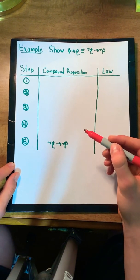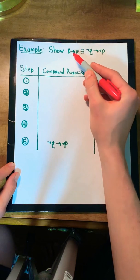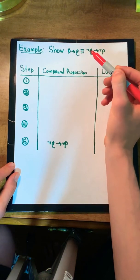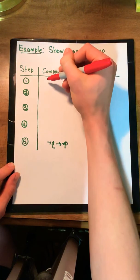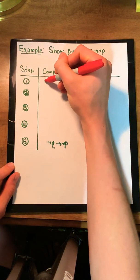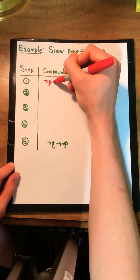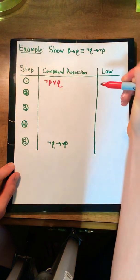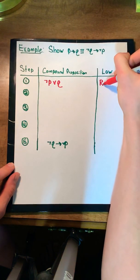So let's go about solving this problem. We remember from our acronym that the first thing we should do is play with this arrow, which we can do using relation by implication. This will change the compound proposition to not P or Q, and that law is RBI.